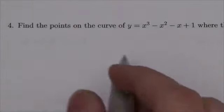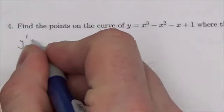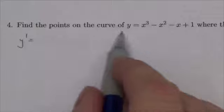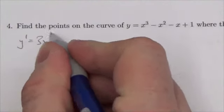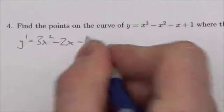So now what I got to do is figure out the slope of the tangent. That's easy enough because if I just take the derivative and apply the power rule to this, I'm going to get 3x squared minus 2x minus 1.